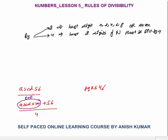Applying the concept that whenever you need to find the remainder, you replace the number with the remainder. 56 is also completely divisible by 4, so the remainder is 0, and overall remainder is 0. Whenever the remainder is 0, it means the number is completely divisible by the divisor. So what matters most is the last two digits, because the previous part is always divisible.